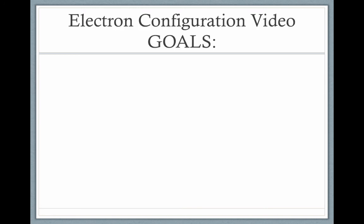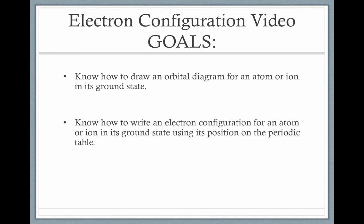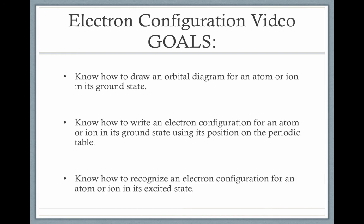That brings us to the end of this video. Let's review our goals. First, we learned how to draw an orbital diagram for an atom or ion in its ground state using arrows to represent electrons and boxes to represent orbitals. Then we learned how to write an electron configuration for an atom or ion in its ground state using its position on the periodic table. Finally, we learned how to recognize an electron configuration for an atom or ion in its excited state.